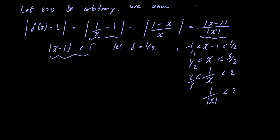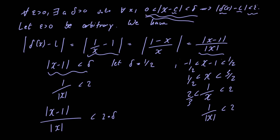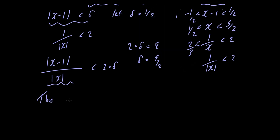We now know the absolute value of x minus 1 is less than delta, and 1 over the absolute value of x is less than 2. So the absolute value of x minus 1 divided by the absolute value of x is less than 2 multiplied by delta. We want this to be less than epsilon, so we solve 2 times delta equals epsilon, giving delta equals epsilon over 2. Thus we take delta to be equal to the minimum of 1 over 2 and epsilon over 2, since both conditions must be satisfied.